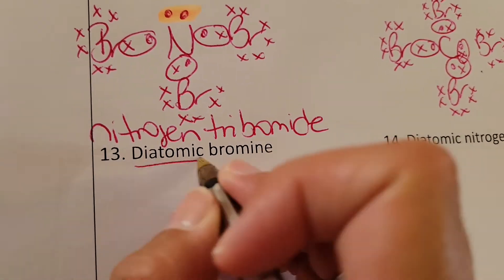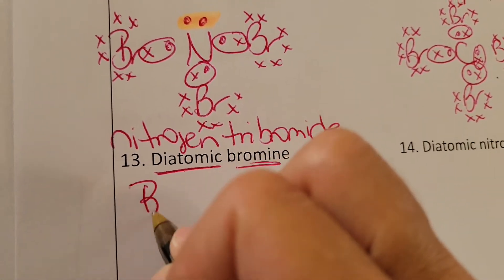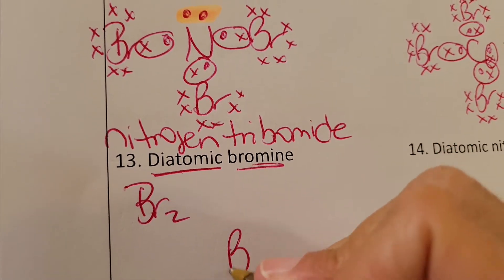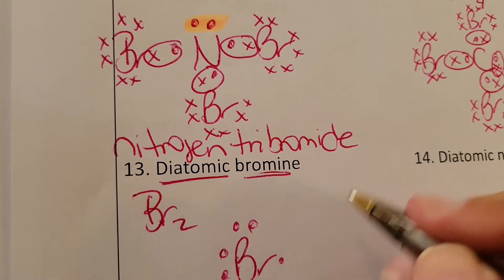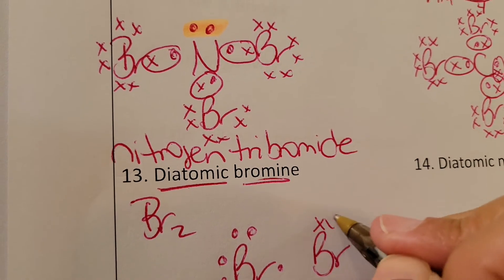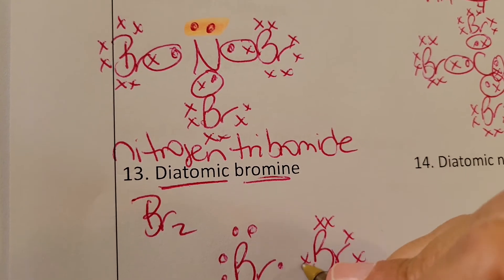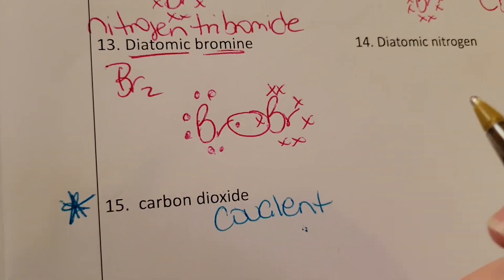Diatomic bromine. So diatomic bromine means Br2. Bromine has seven: one, two, three, four, five, six, seven. The other bromine, one, two, three, four, five, six, seven. And they share. So we have a single covalent bond.